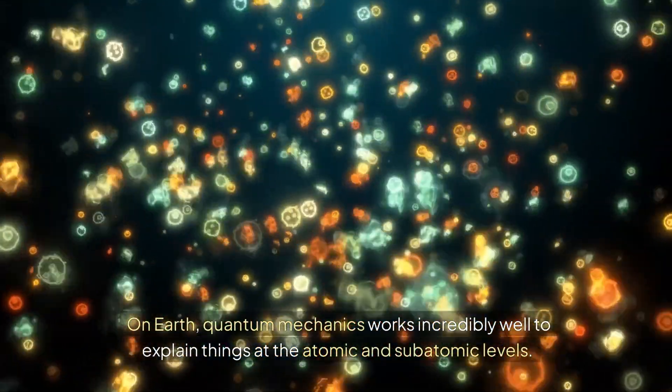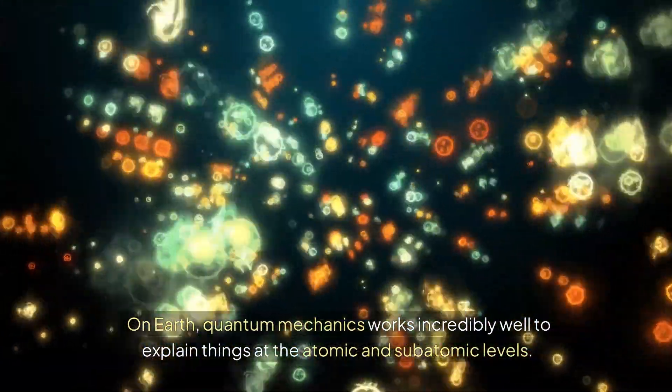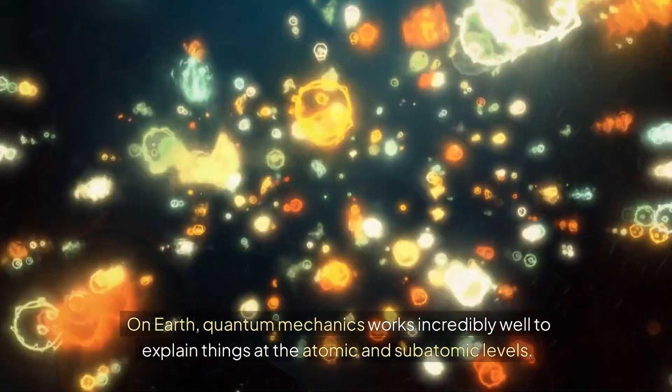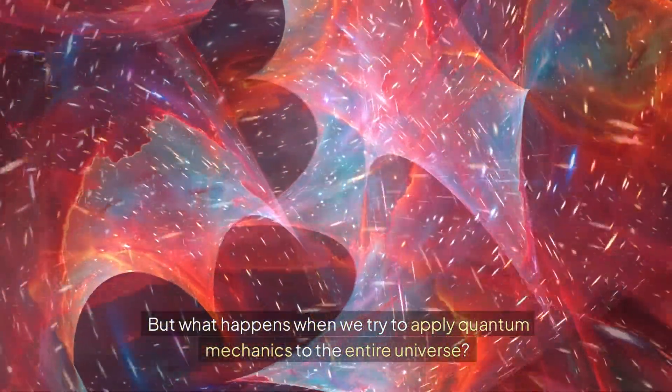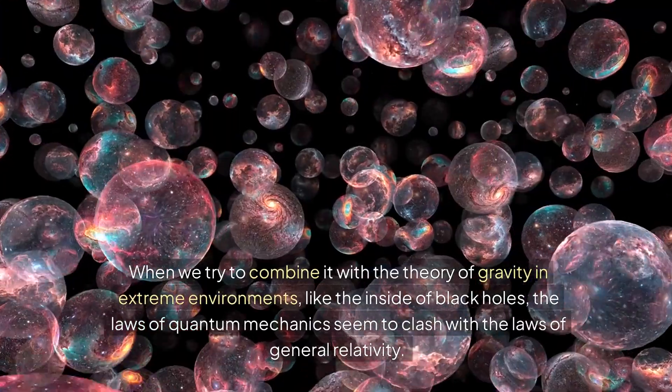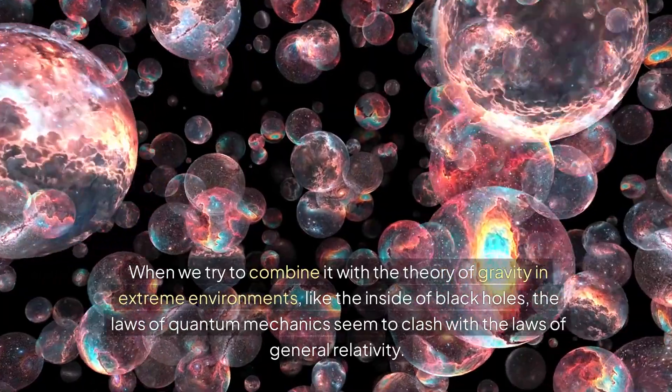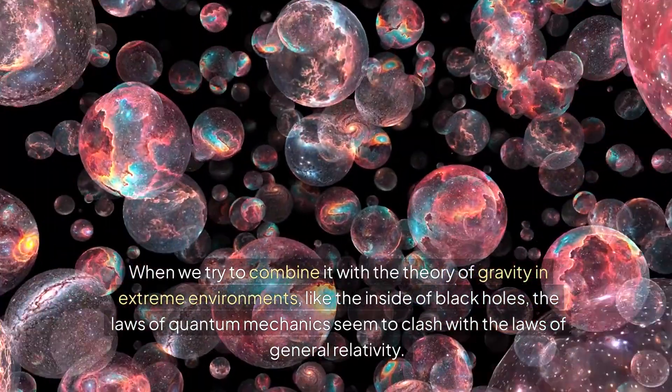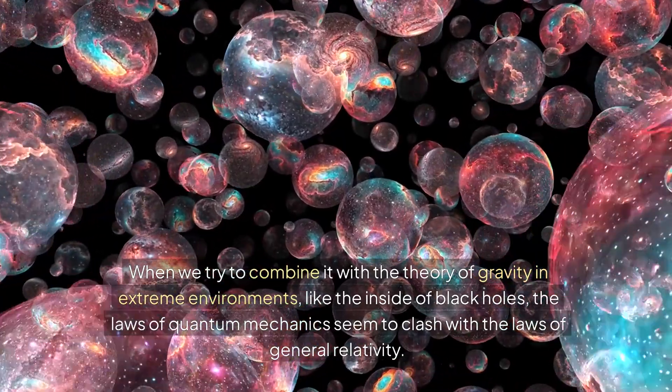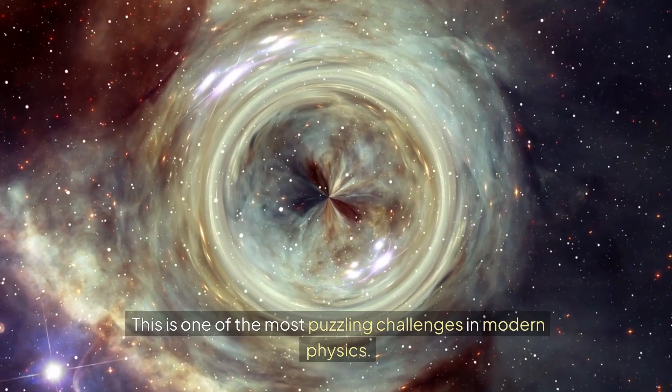On Earth, quantum mechanics works incredibly well to explain things at the atomic and subatomic levels. But what happens when we try to apply quantum mechanics to the entire universe? When we try to combine it with the theory of gravity in extreme environments, like the inside of black holes, the laws of quantum mechanics seem to clash with the laws of general relativity. This is one of the most puzzling challenges in modern physics.